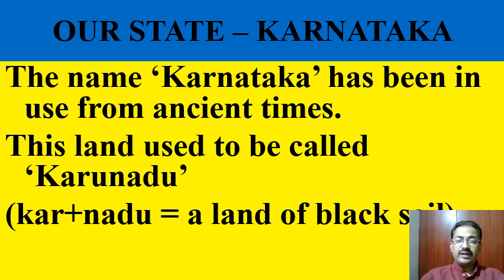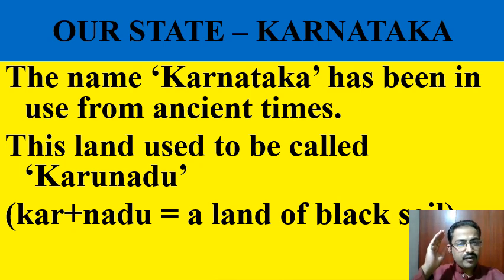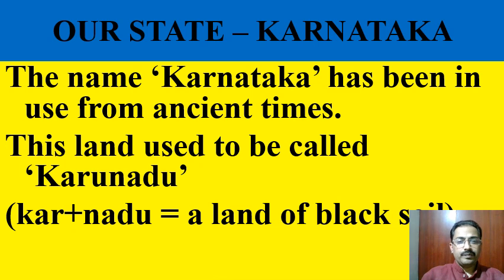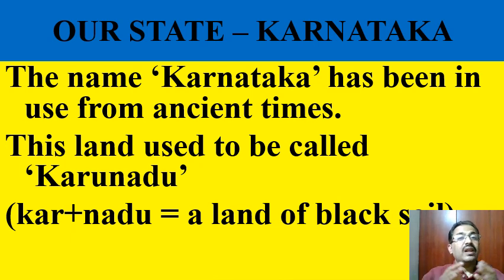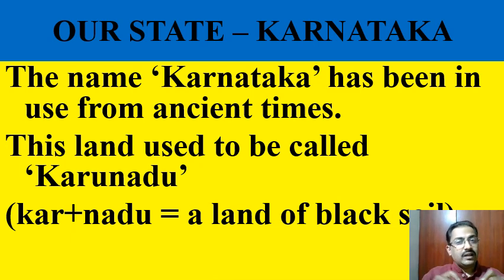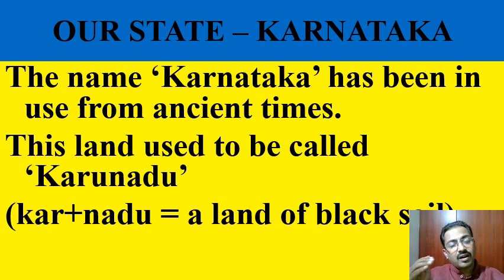How did this state get its name? The name Karnataka has been in use right from ancient times and we have evidence for it. The word Karunadu is from Kar plus Nadu. Kar means black, Nadu means the area or state — so the land of black soil. Karnataka is nothing but the land of black soil; that is the meaning of Karunadu. So from the word Karunadu, Karnataka has come.